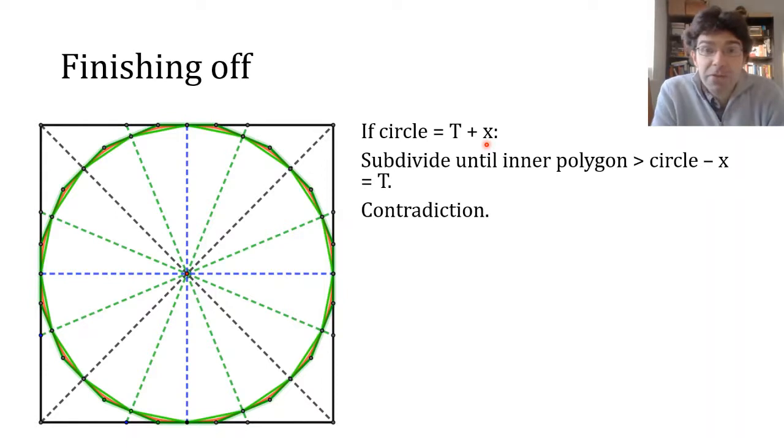Now, if we bisect the quadrants of the inscribed square enough times, what we're going to get, as we just showed, is an inscribed polygon that is close enough to the circle that its area is more than T. The difference between the circle and the inscribed polygon is going to get less than x at some point. But we saw that any polygon inside the circle can be broken down into triangles, where we can see that the total area is going to be less than T, so we get a contradiction.